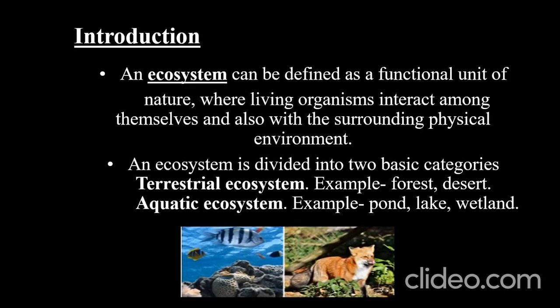Welcome to the first video session of the chapter Ecosystem. In this module we will be dealing about a general introduction to ecosystem, the meaning of the word ecosystem, and the different components in an ecosystem. Let us first begin by understanding the meaning of the word ecosystem. Ecosystem comprises of two different words: eco and system. Eco is related to environment, and system is a collection of many components that work together for a common purpose.